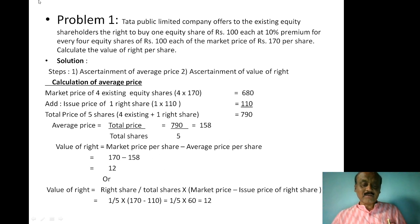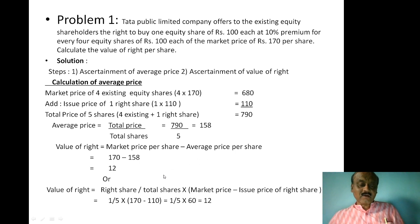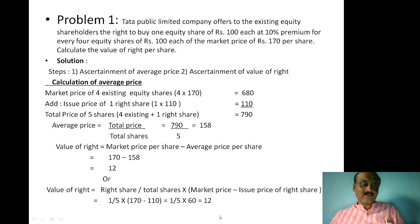Alternative formula: value of right share equals right shares divided by total shares, multiplied by market price minus issue price. Right shares = 1, total shares = 5 (4 existing + 1 right), market price = ₹170, issue price = ₹110. So: 1 ÷ 5 × (170 − 110).